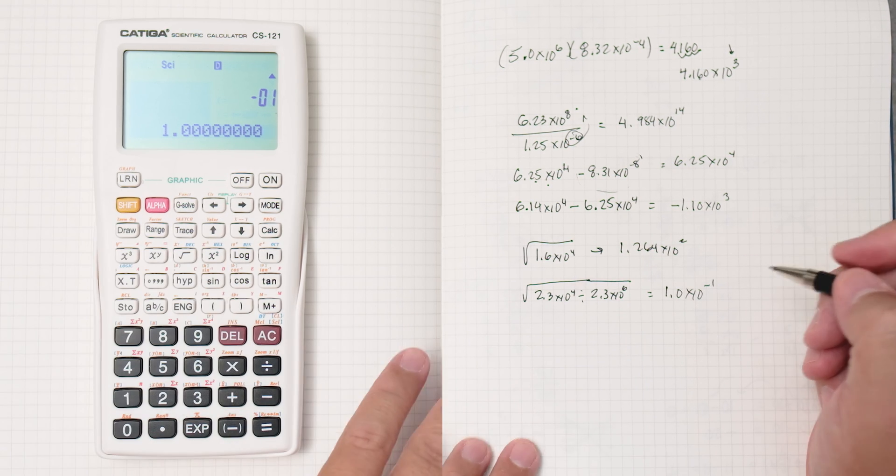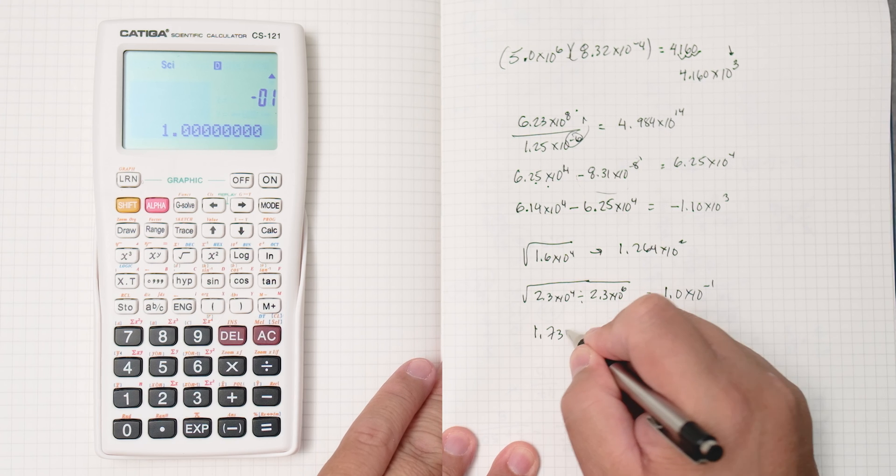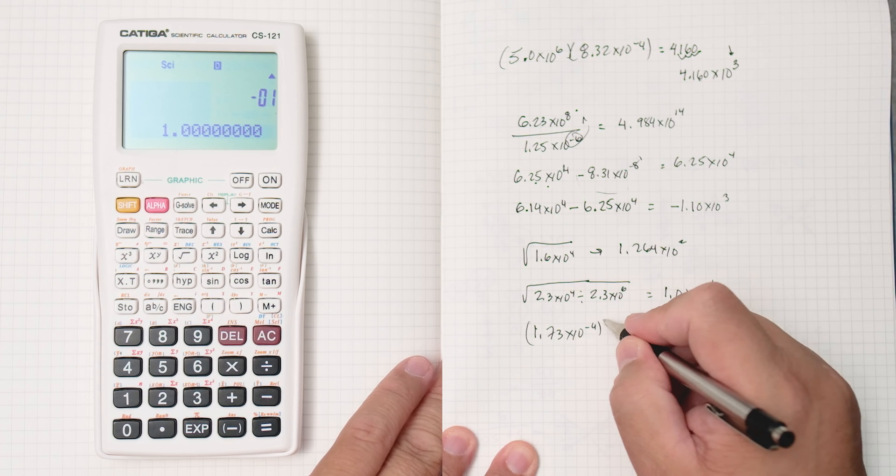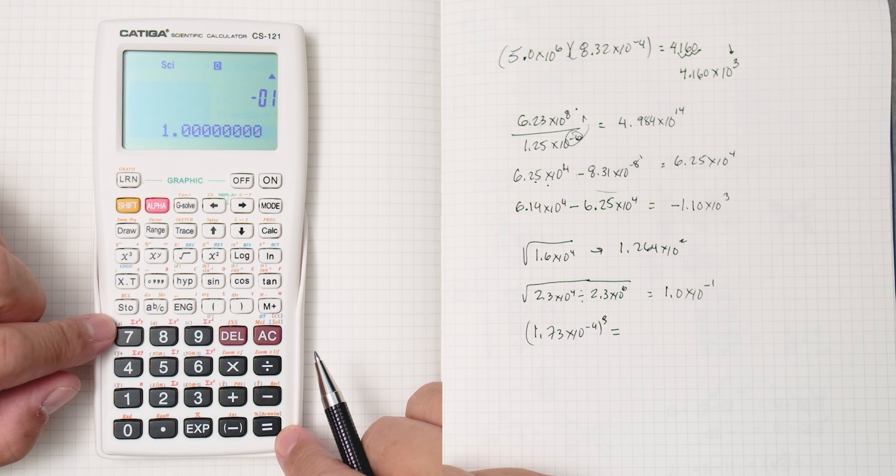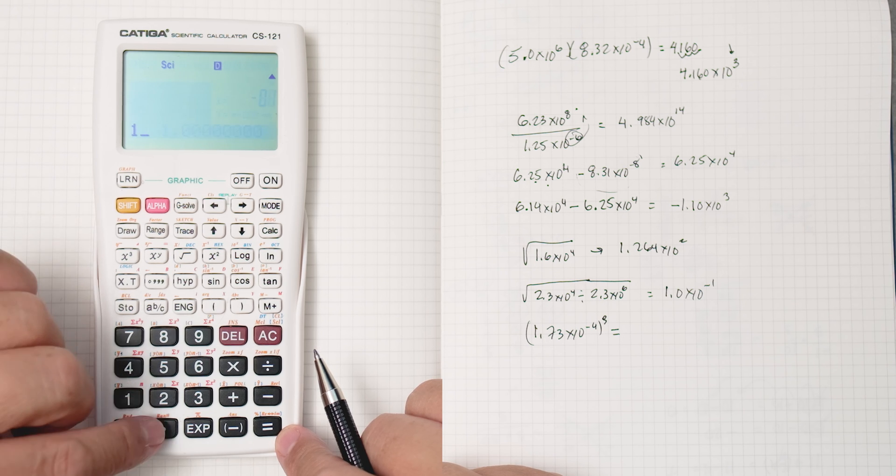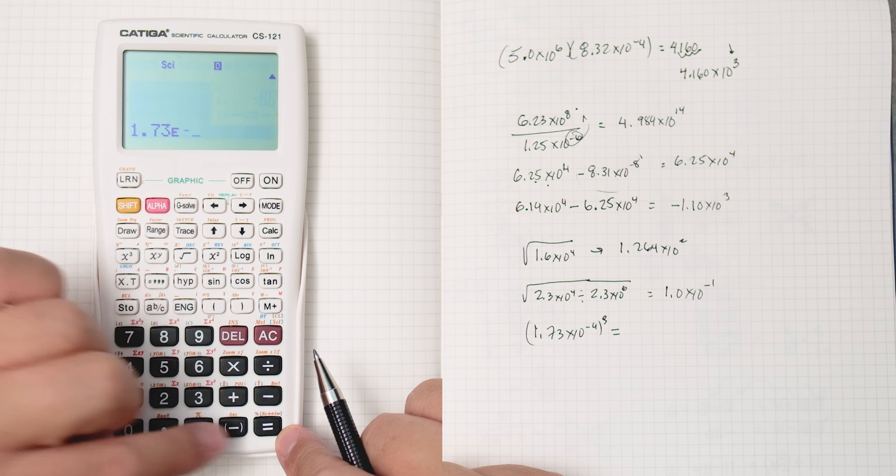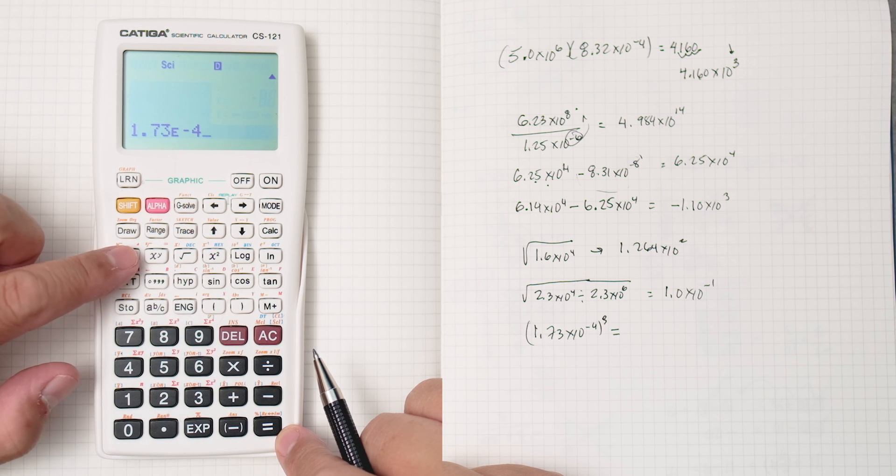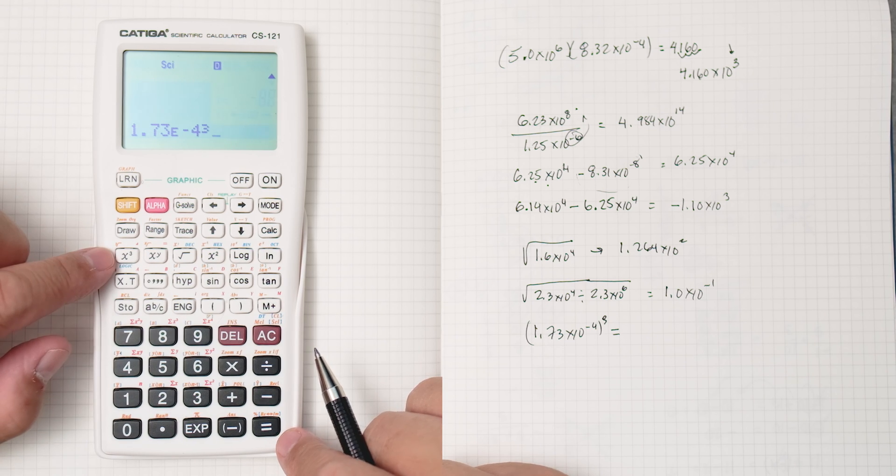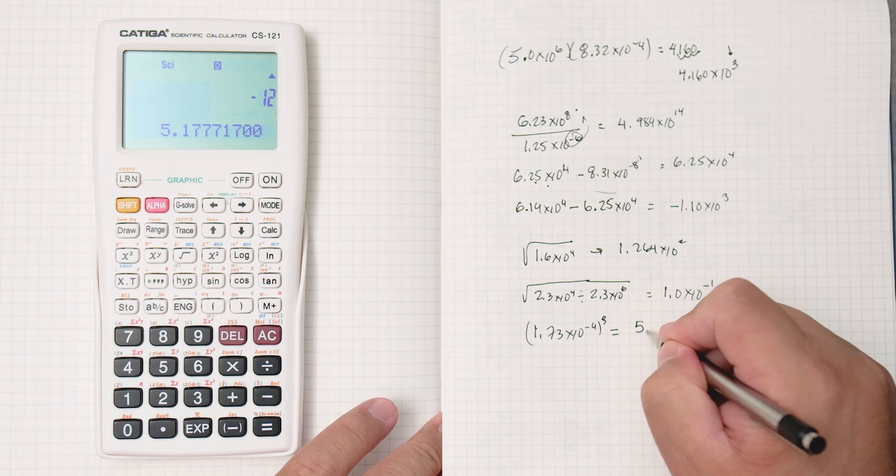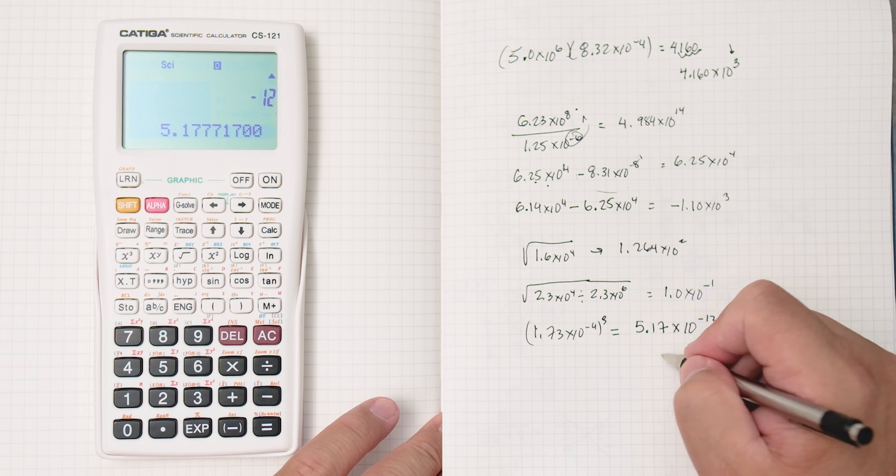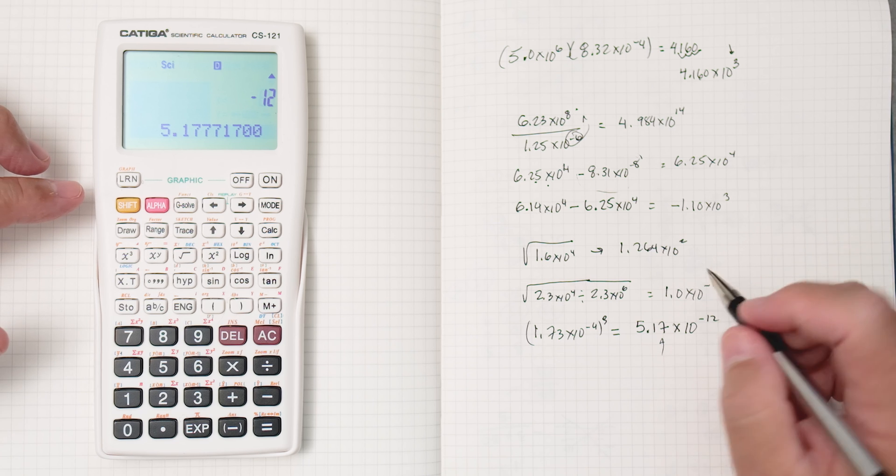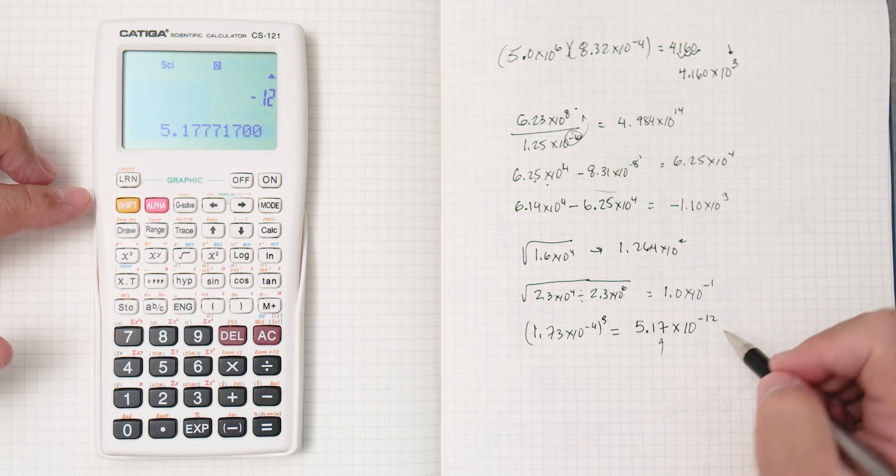Okay, and then powers, 1.73 times 10 to the minus 4 to the, let's say, 3rd power. What we can do is 1.73 times 10 to the minus 4 and then x to the 3rd. Because we're going to the 3rd power equals 5.17 times 10 to the minus 12. And again, significant digits, that's going to be up to your teacher. You can see that negative 4 times 3 gives you negative 12.